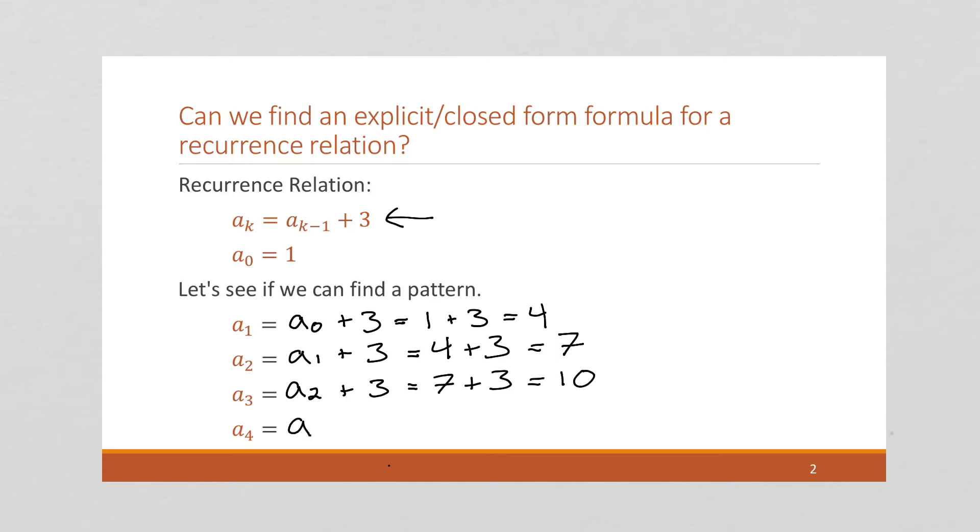A sub 4, k is 4, so 4 minus 1 is 3, plus 3 is 10 plus 3.